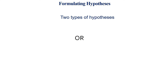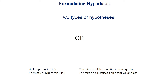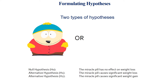Don't forget, we have two types of hypotheses. We have the null hypothesis — this is the hypothesis of no effect. Basically, we're going to say the weight loss pill has no effect on weight. An alternative hypothesis would be that the miracle weight loss pill causes significant weight loss, and of course you could also have it cause weight gain as well.